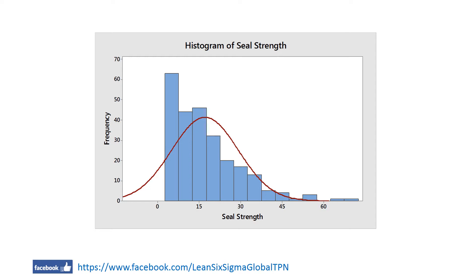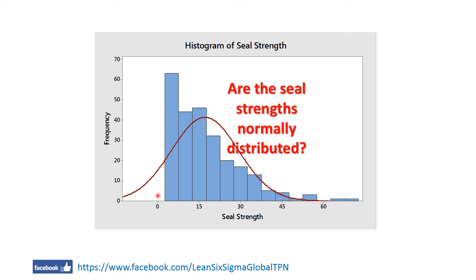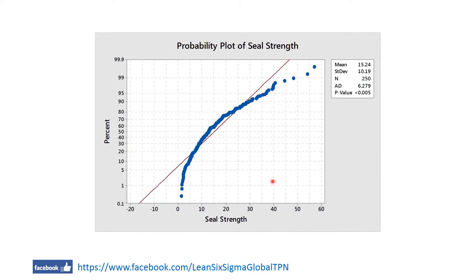Does this data appear to come from a normally distributed population? This histogram is skewed to the right, and the p-value for the Anderson-Darling test is less than 0.05.